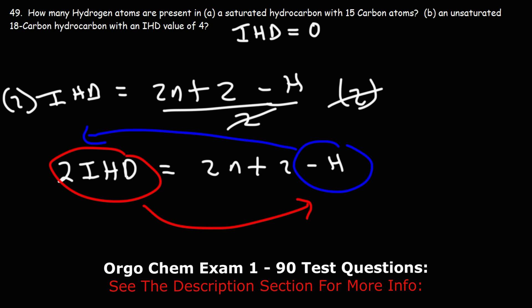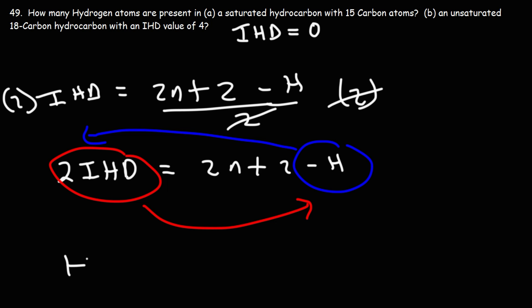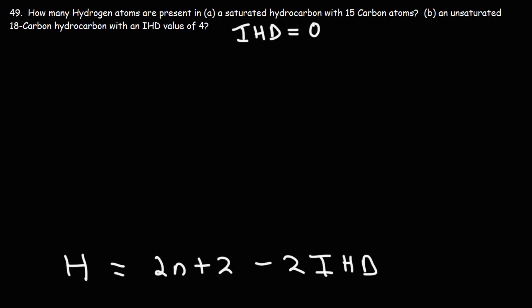When I move negative H from the right to the left, it's going to change to positive H. And when I move positive 2 IHD from the left to the right side, it's going to change to negative 2 IHD. So that's the formula to calculate the number of hydrogen atoms, if you know the number of carbon atoms, and the IHD value.